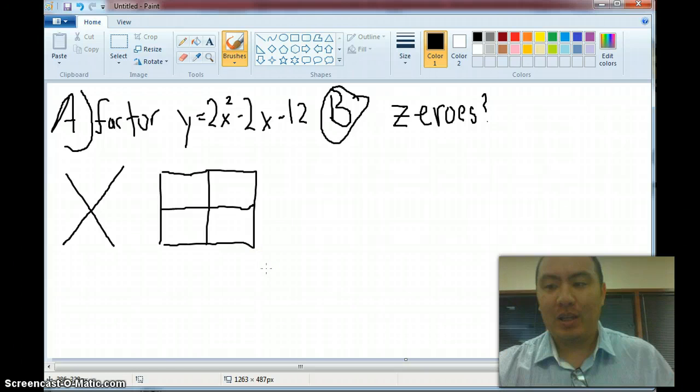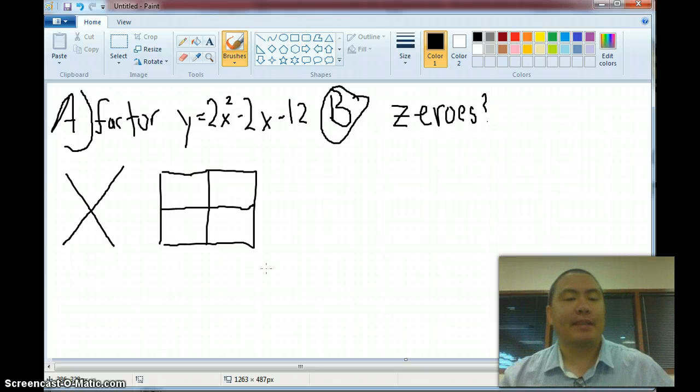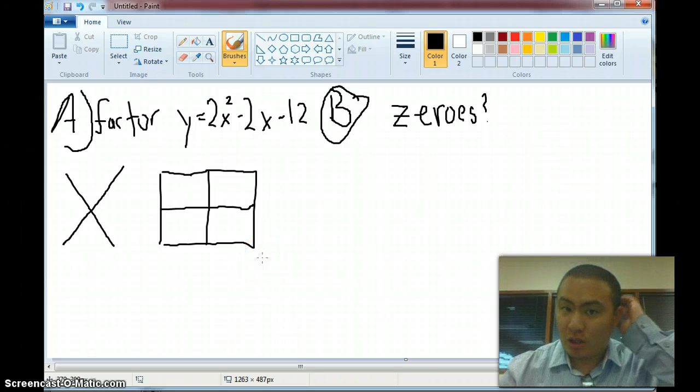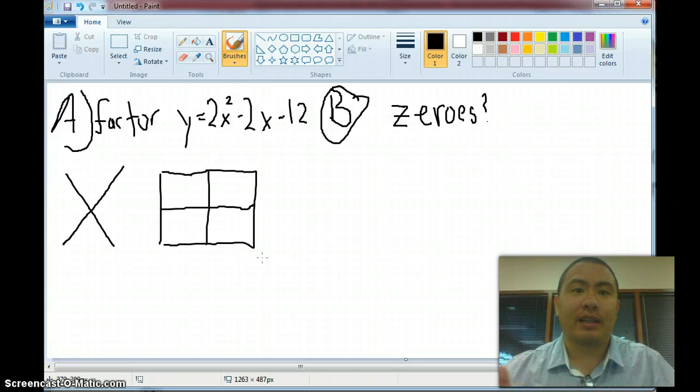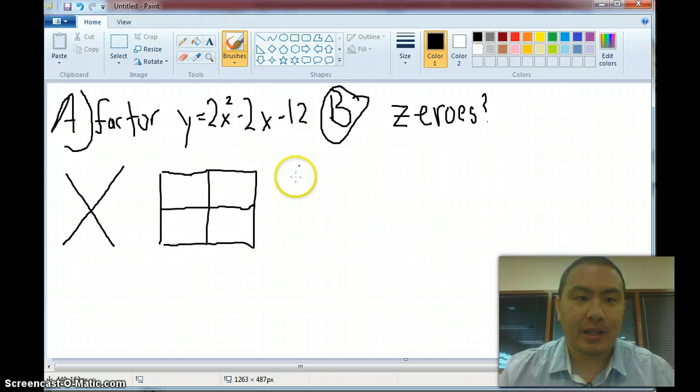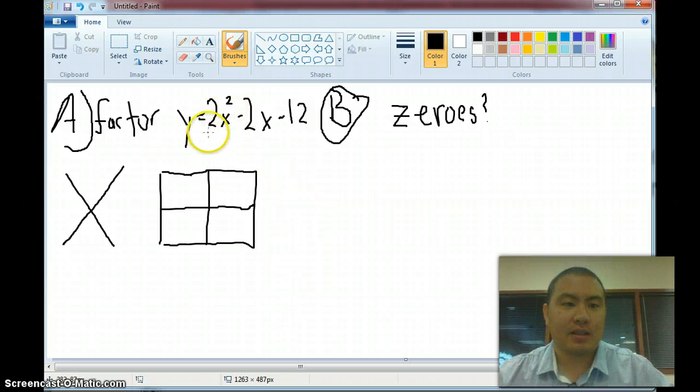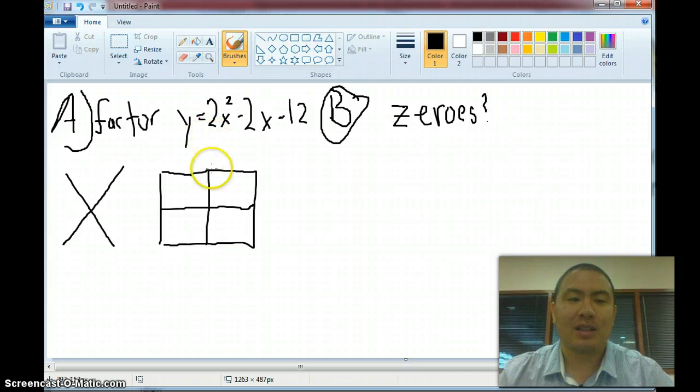So what we talked about in class today was the Xbox method, which is basically what you want to use instead of just guessing to help you organize your thoughts for factoring when it's a quadratic and has something big like this 2 in front of the x squared. When the a is bigger than 1, you can't just do the area model because it becomes really hard to just kind of guess.